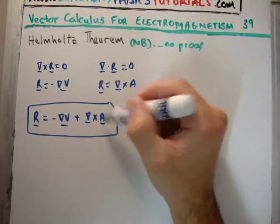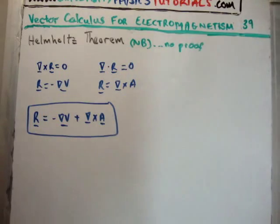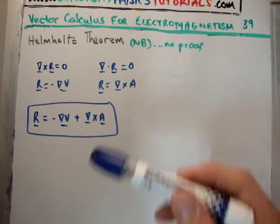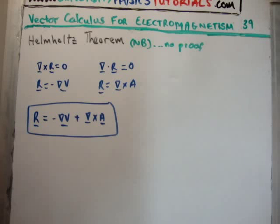Just to note: the vector potential A is also not unique, because the gradient of any scalar function can be added to A without changing the field, since the curl of a gradient is zero. This is similar to adding constants to the scalar potential — it allows us to talk about different gauges. The Helmholtz theorem is very important; we'll be dealing with curl-free, irrotational, and divergence-free fields throughout. Thanks for watching, please share it with friends, subscribe, and visit universityphysicstutorials.com.